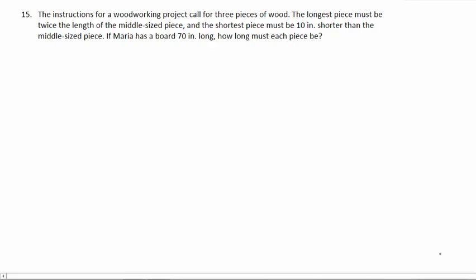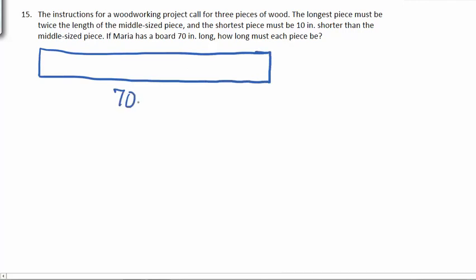Number 15. The instructions for a woodworking project call for 3 pieces of wood. The longest piece must be twice the length of the middle size piece, and the shortest piece must be 10 inches shorter than the middle size piece. If Maria has a board 70 inches long, how long must each piece be? So she has a board that's 70 inches long, and we want to break it up into 3 pieces: a long piece, a medium size piece, and a short piece. We know that the long piece must be twice the length of the middle piece, so twice as long as the middle, 2 times M. We also know that the shortest piece must be 10 inches shorter. Shorter indicates subtraction, so M minus 10.